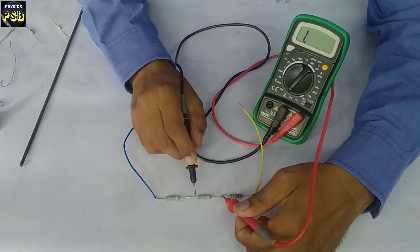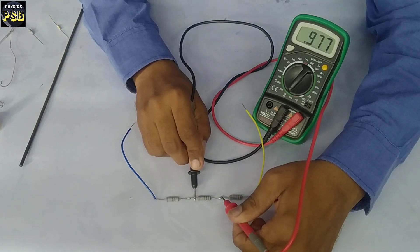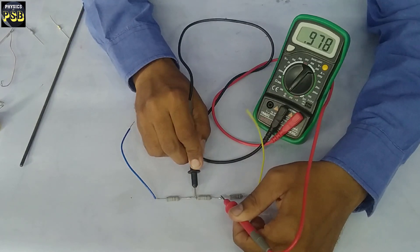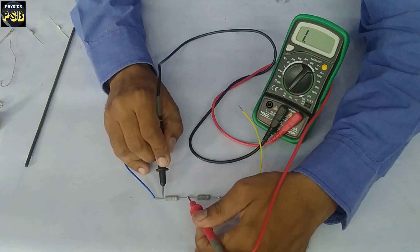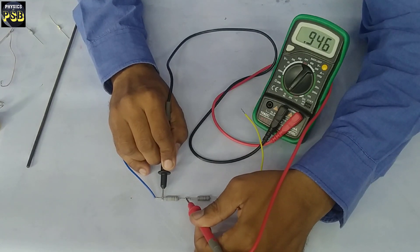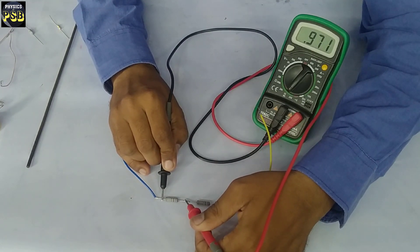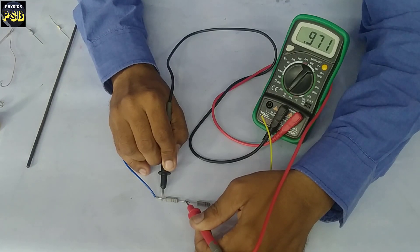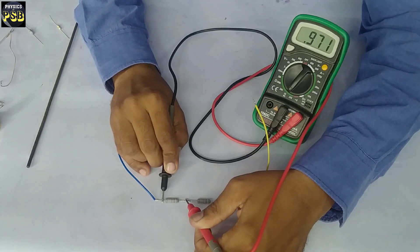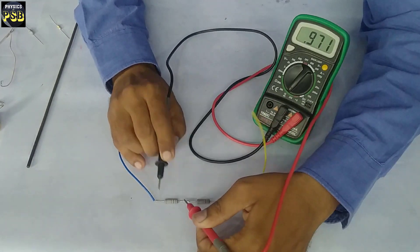Now I do the same for this resistor. It also reads around 1000 ohm, that is 978 ohm. And the third one also has resistance around 1000 ohm, that is 971 ohm.